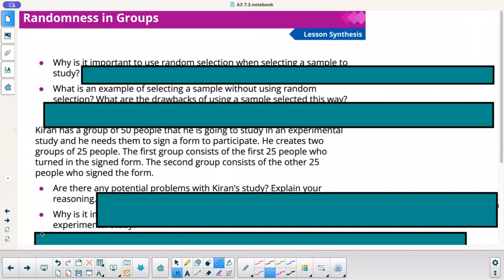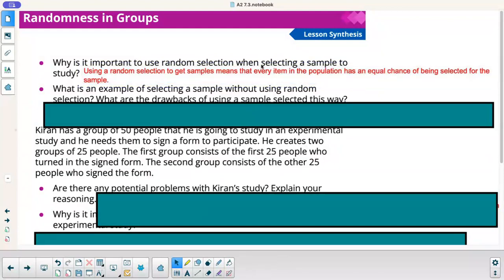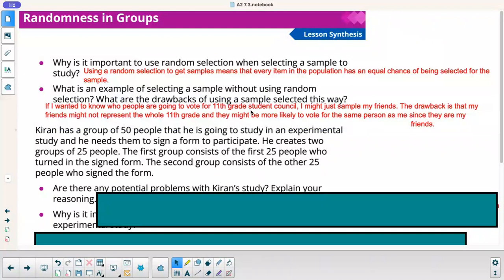So why is it important to use random selection when selecting a sample to study? Using random selection to get samples means that every item in the population has an equal chance of being selected for the sample. You won't get any skewed data. It's supposed to represent the whole group. What's an example of selecting a sample without using random selection? What are the drawbacks of using a sample selected this way? Random example, if I want to know who people vote for for the 11th grade student council, I might just sample my friends. The drawback is that my friends might not represent the whole 11th grade. It might be more likely to vote for the same person as me since they are my friends. You want to definitely truly do random surveys there.